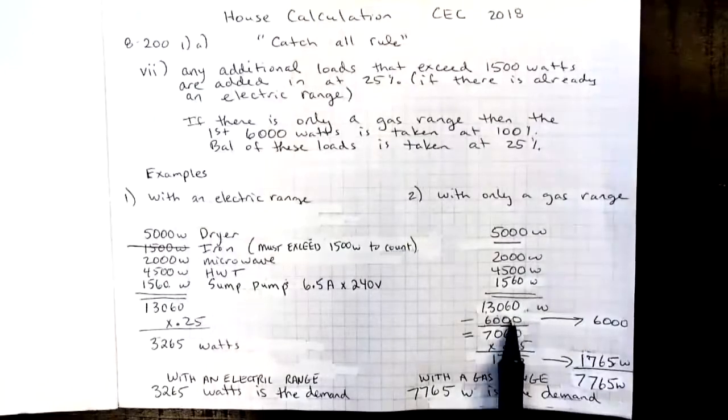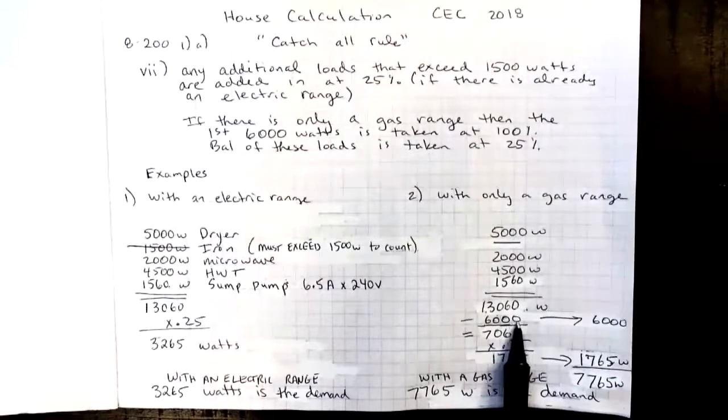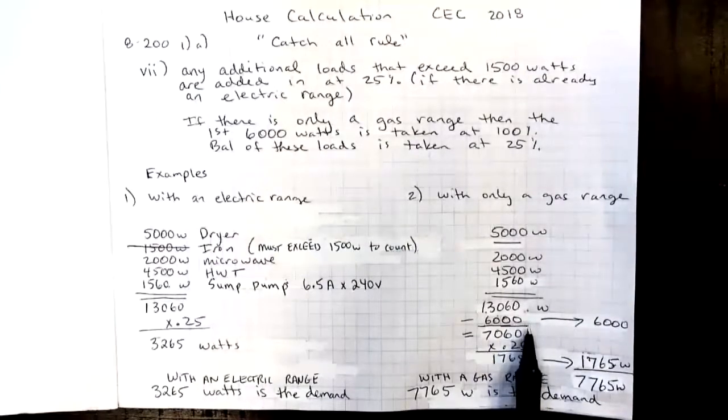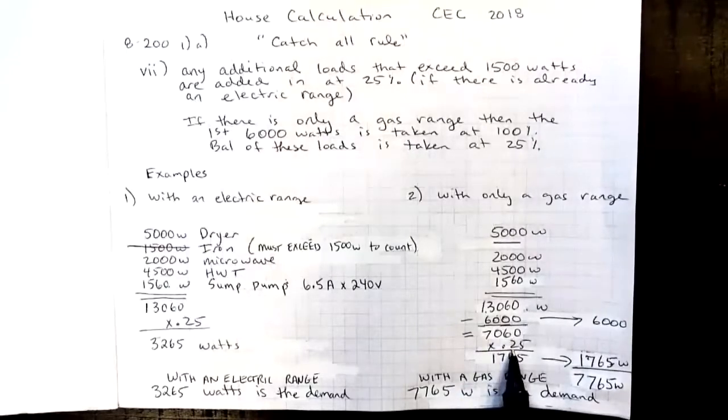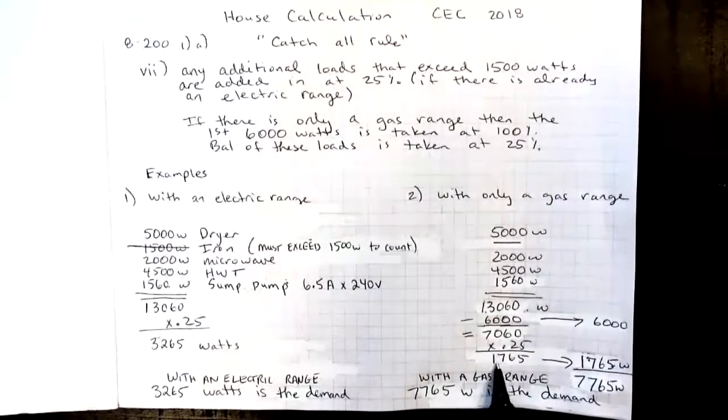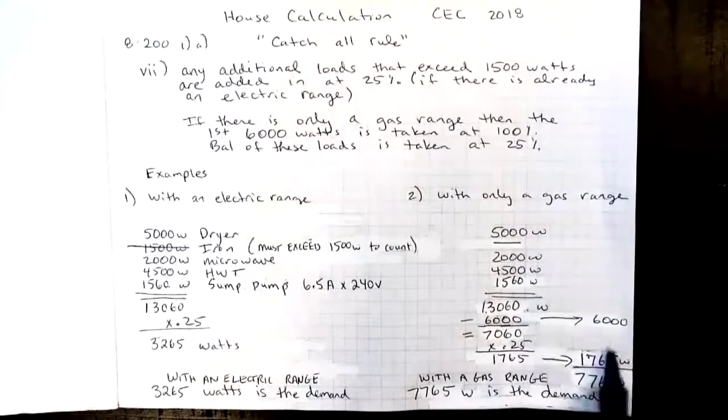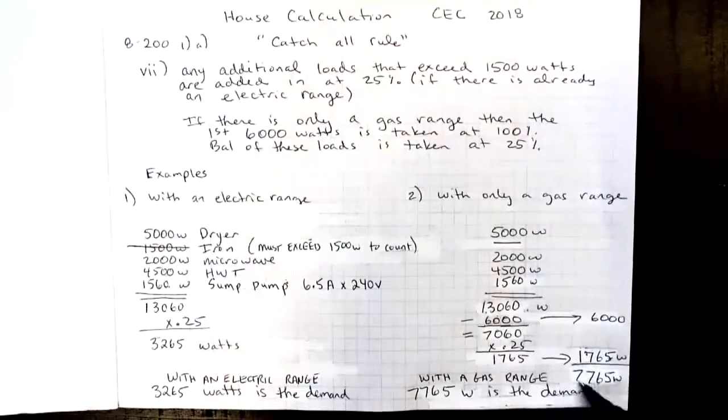This kind of replaces the fact that we don't have a range calculated in, because we had a gas range. Then we subtract that out of our total, and we end up with 7,060. That 7,060 is going to go in at a demand factor of 25%. So we're going to take that 25% over here.